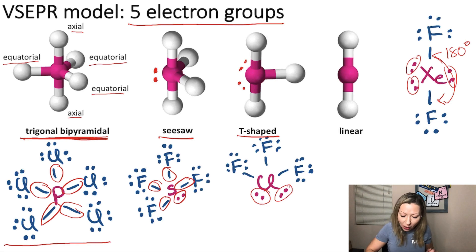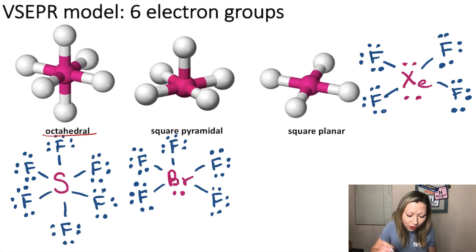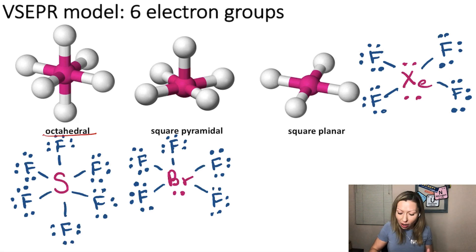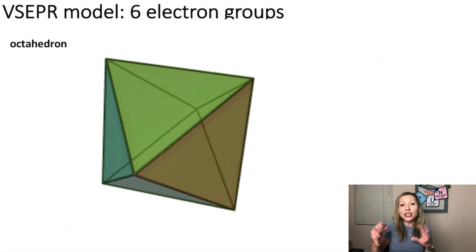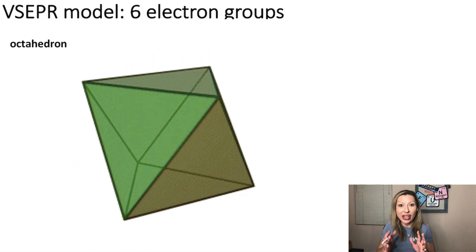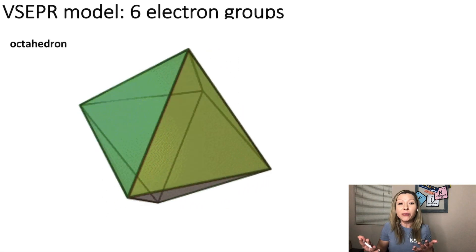What happens when we actually have six electron groups around the central atom? We are going to get a structure that is called octahedral. You may ask why it's called octahedral — octa is eight, but we have only six electron groups. It actually comes from the octahedron, which has eight faces, and that's where the name of the octahedral structure comes from.